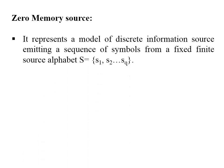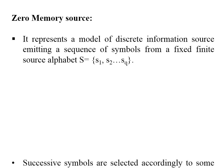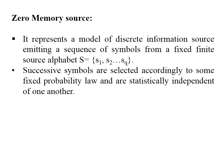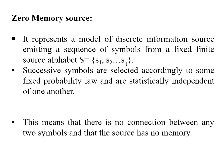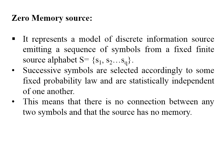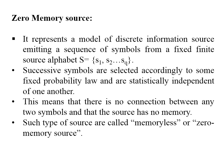What is a zero memory source? It represents a model of a discrete information source emitting a sequence of symbols from a fixed source alphabet S = {S1, S2, S3, ...}. Successive symbols are selected according to some fixed probability law and are statistically independent of one another, meaning there is no connection between any two symbols and the source has no memory. Such sources are called memoryless or zero memory sources.